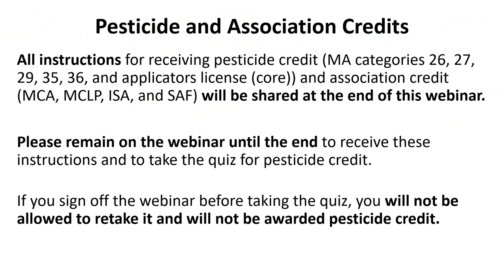Before I introduce our speaker today, I do want to give a few reminders about pesticide and association credits for those of you seeking those as a result of watching today's broadcast. All instructions for receiving the pesticide credit for Massachusetts categories 26, 27, 29, 35, 36, and the applicator's or core license, as well as association credits for MCA, MCLP, ISA, and SAF will be shared at the very end of this webinar. Please remain on the webinar until the end to receive these instructions and to take the quiz for the pesticide credit. This quiz is only five questions long and is required for those looking to receive pesticide credit.